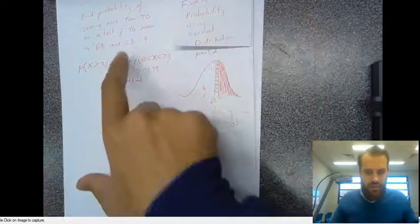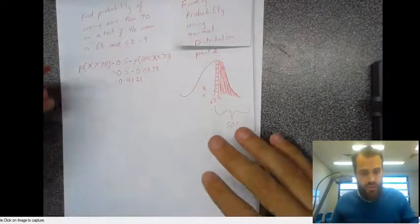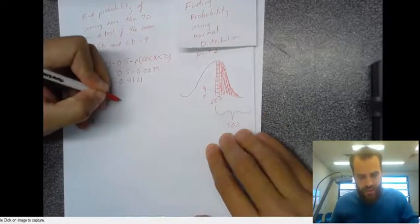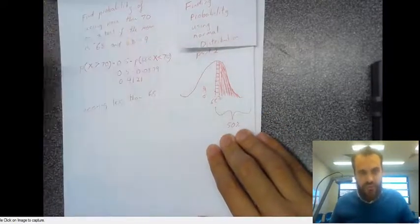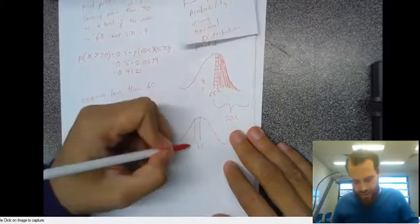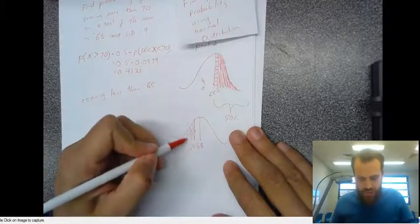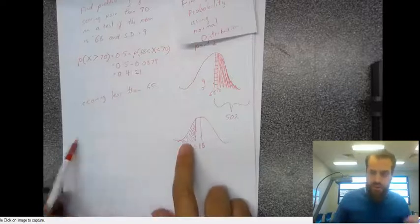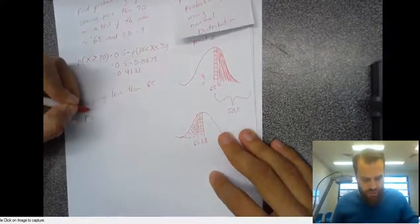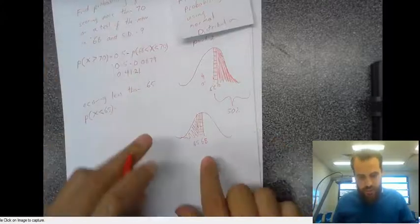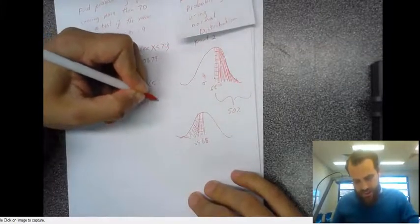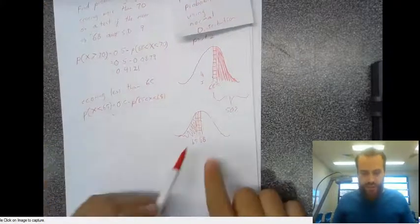One more thing — this question could be done backwards. If it said find the probability of scoring less than 65, the normal distribution still looks like this with 68 here. There's 65. We want to know this less than 65, but we can't come at it directly because it goes on forever. So we do this bit: the probability that x is less than 65 equals 0.5 minus the probability that 65 is less than x, which is less than 68. You can calculate that similarly.